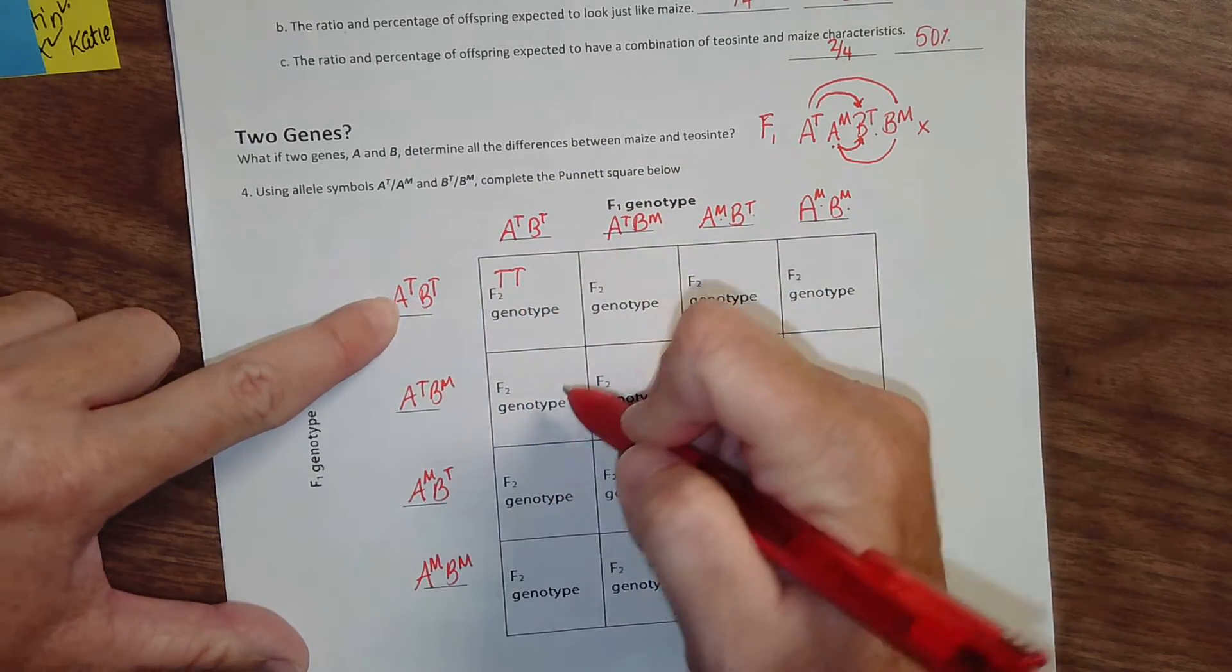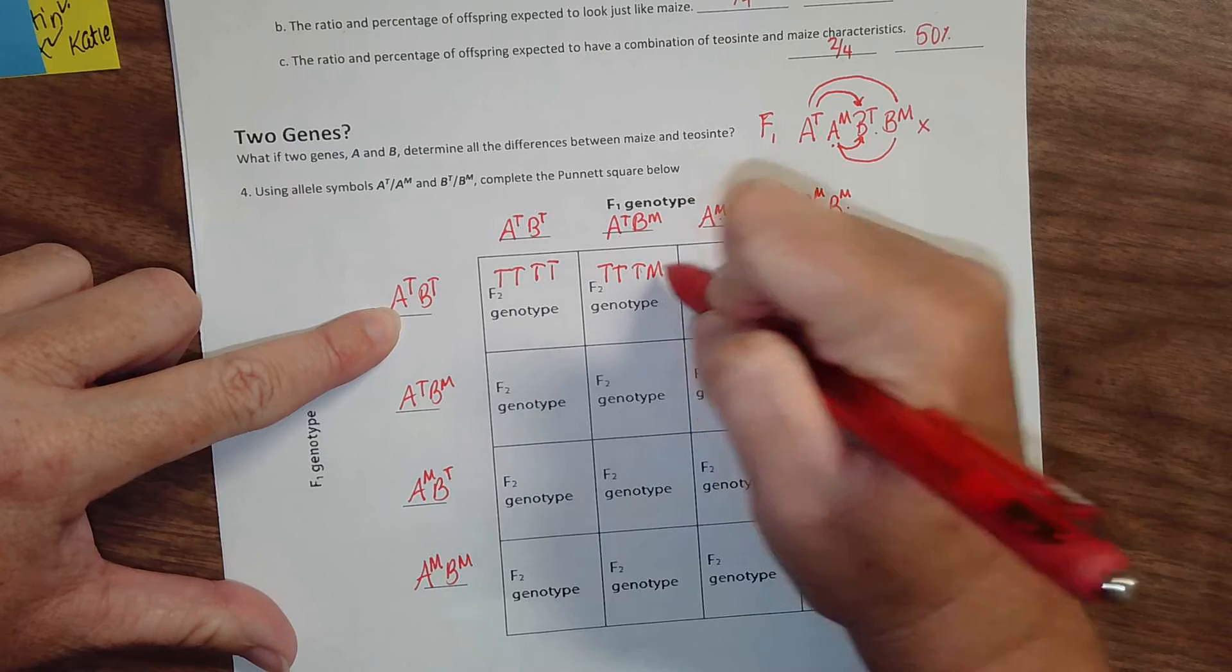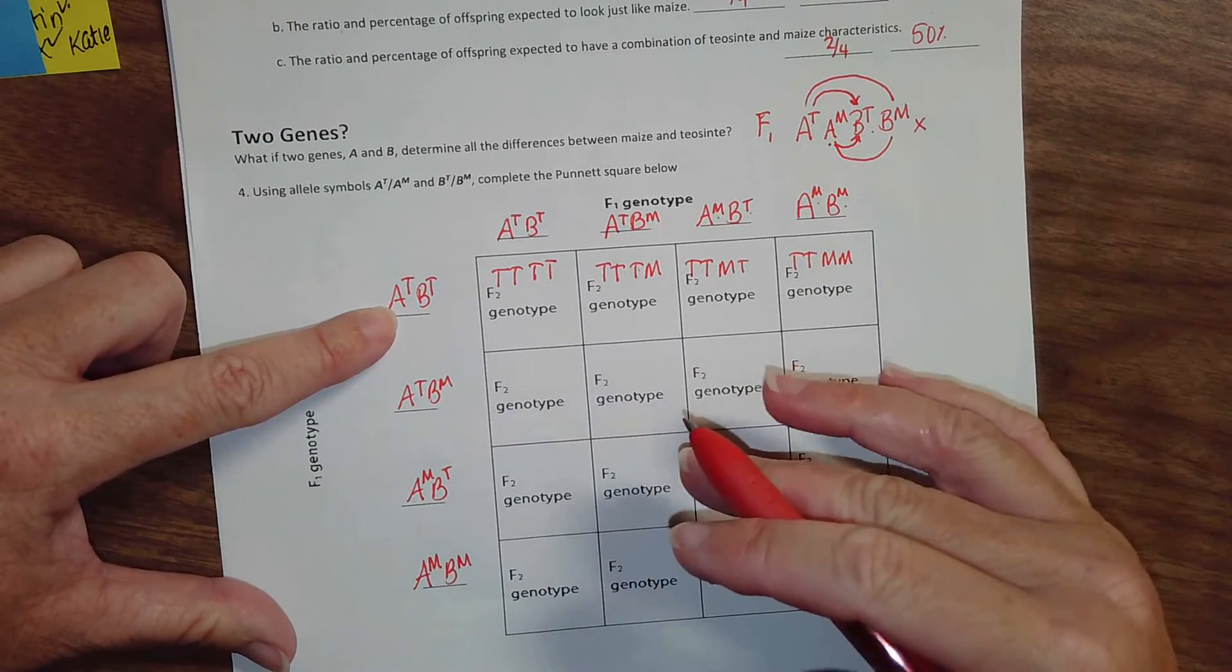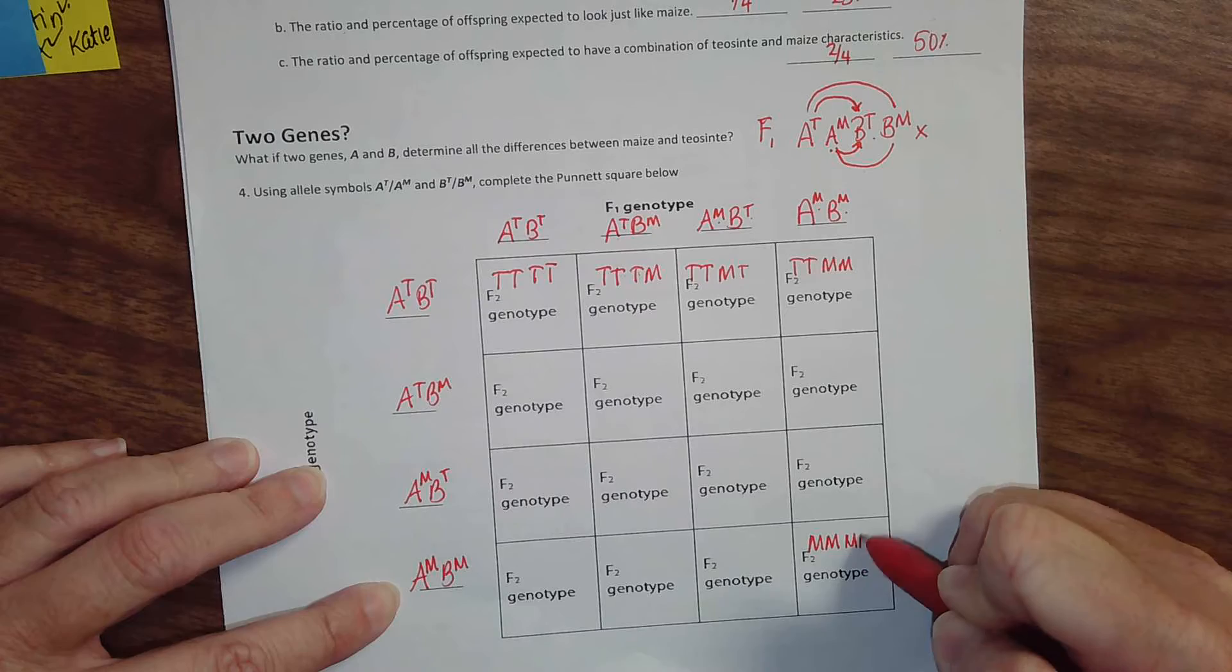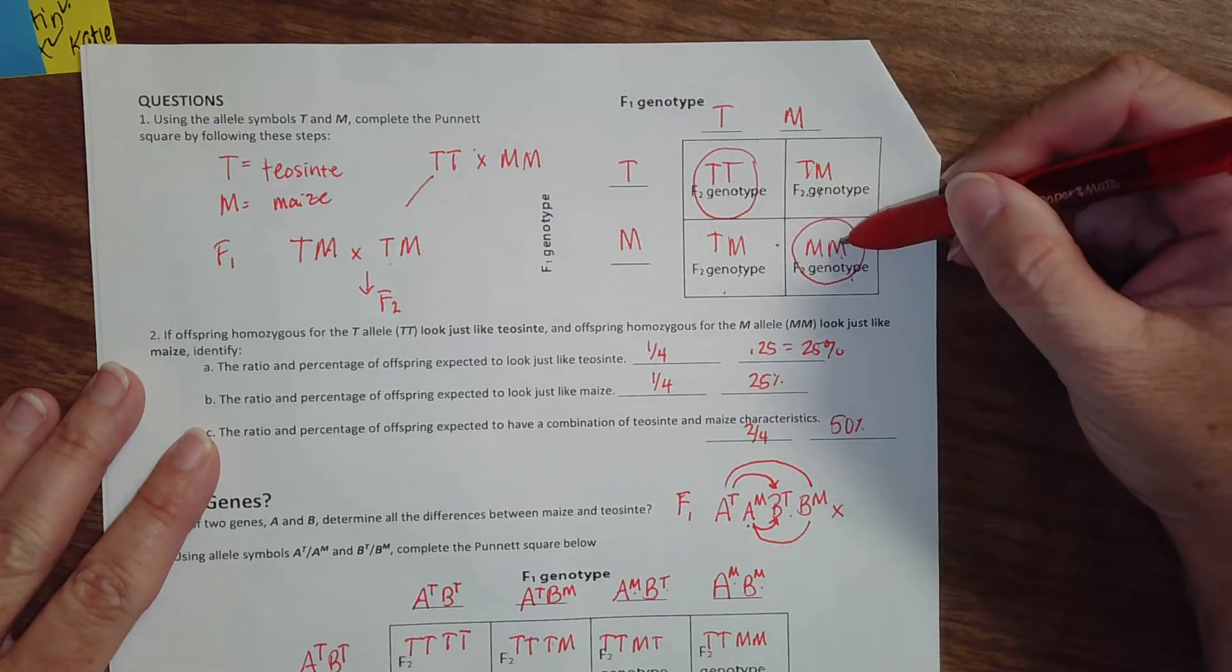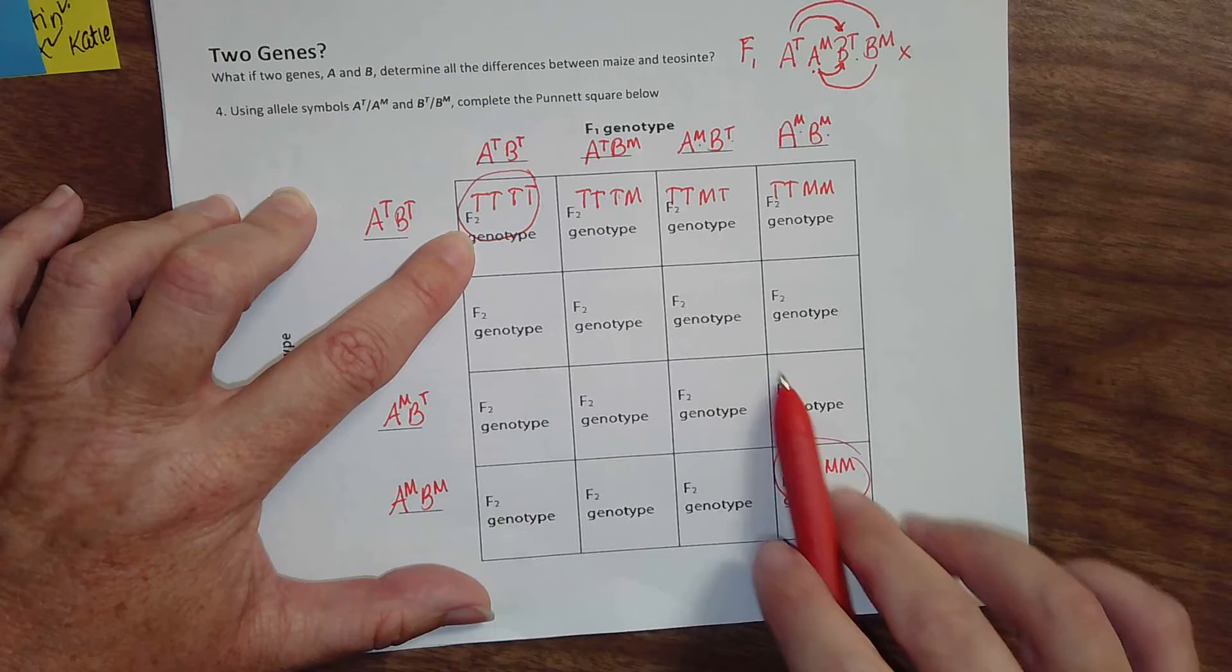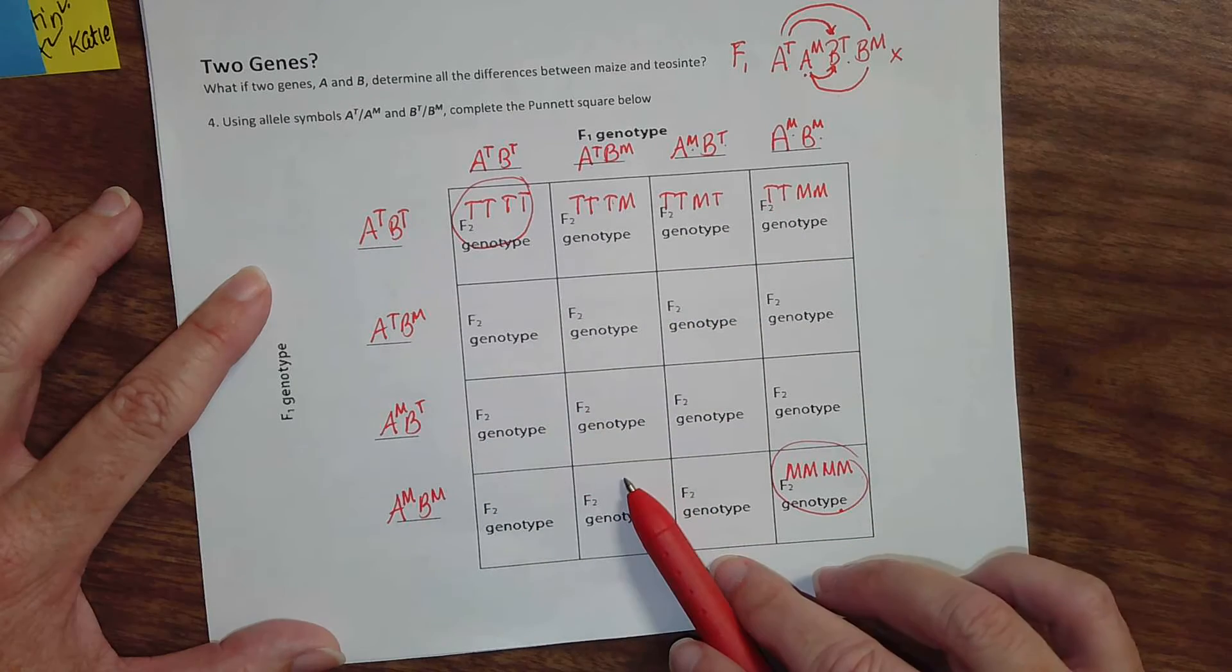I'm going to take this one here. Two T's. Two T's. Two T's. And so on. You can fill out the entire Punnett square. I'll let you finish that up. But one thing I want you to notice is that down here in this corner, you're going to have all M's. So just like this first Punnett square, in this corner we had all T's, and in this corner we had all M's. Same thing here. We've got all T's here and all M's. So what that means is that one out of 16 times you're going to get Teosinte. One out of 16 times you're going to get maize. The other 14 times you're going to get the hybrid.